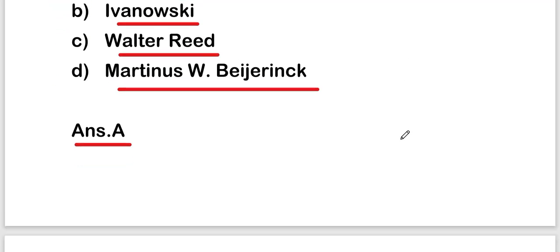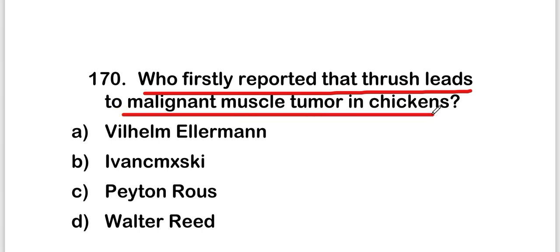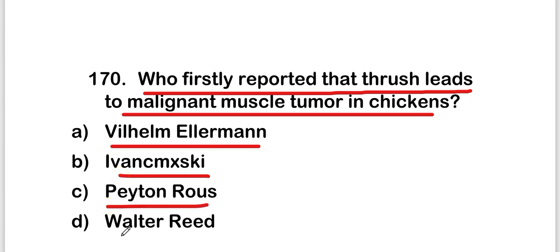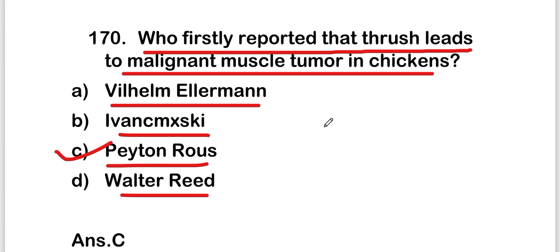Next question: who first reported that a virus leads to malignant muscle tumor in chickens? Options: Wilhelm Ellermann, Ivanovski, Peyton Rous, or Walter Reed. The right answer is option C — Peyton Rous. He first reported that a virus leads to malignant muscle tumor in chickens.